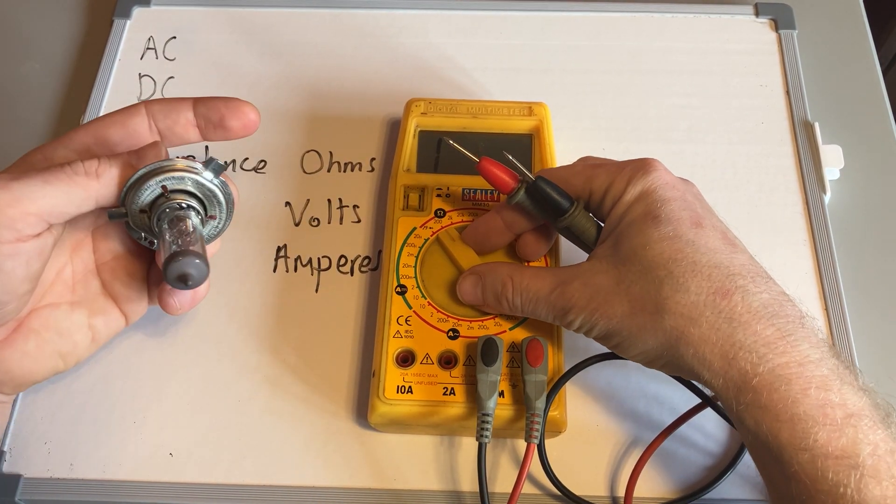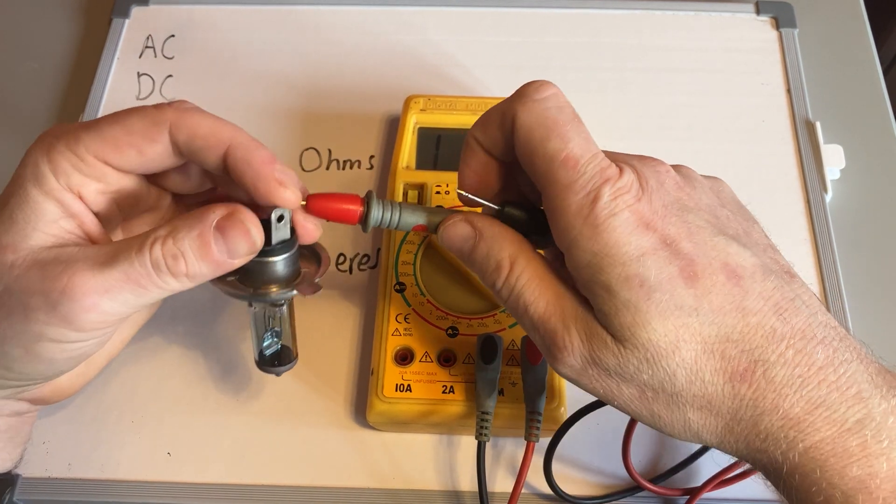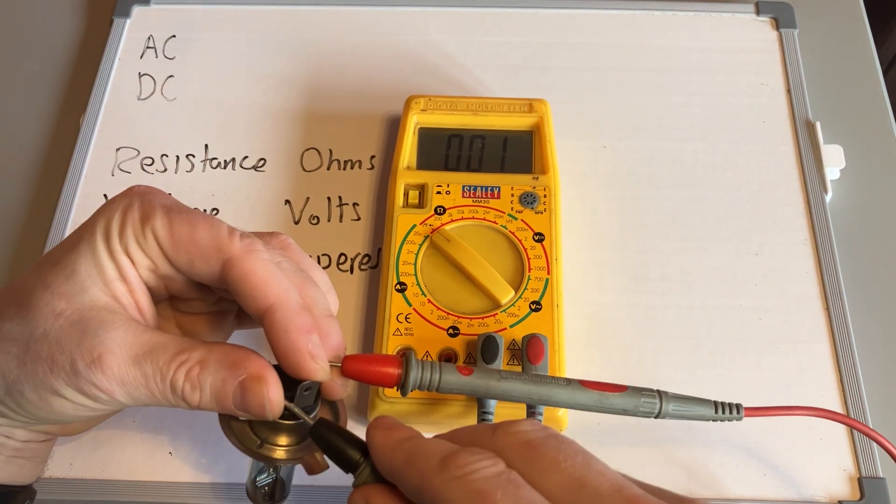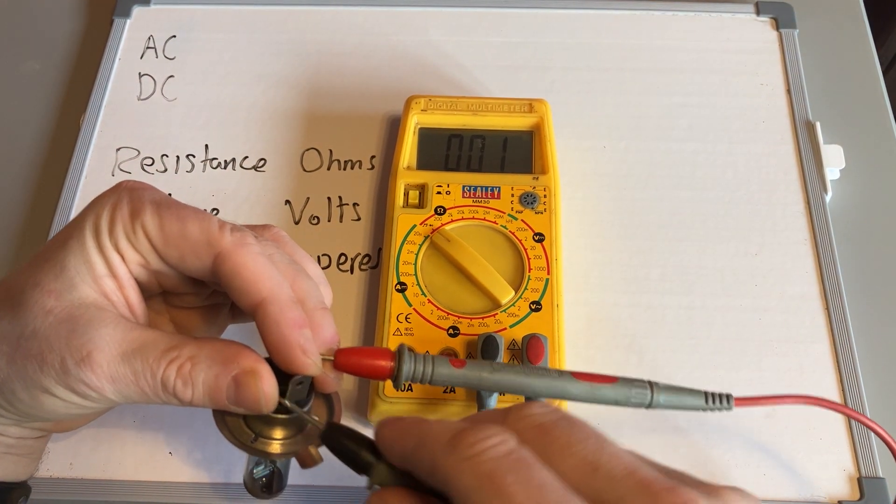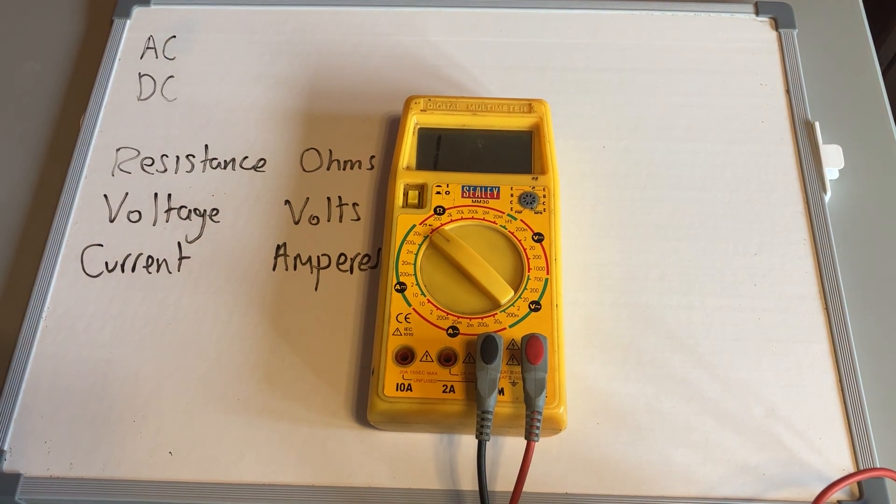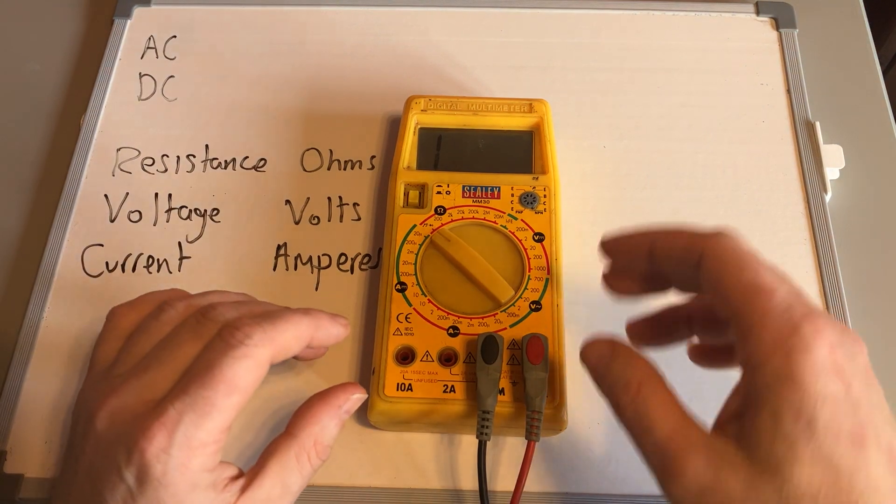If all you want to know is whether this bulb is complete or the wiring inside is complete, there's also this speaker setting here, or diode test, which is just a continuity test. It's just checking if the wiring inside the test component is continuous. You just get a buzz, and that's telling me the wire inside that bulb is okay, and then you can move on to the next part of your diagnostics.